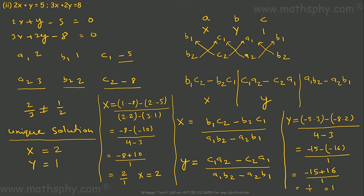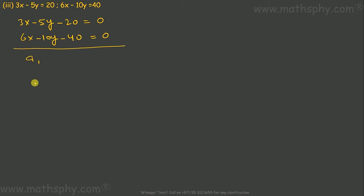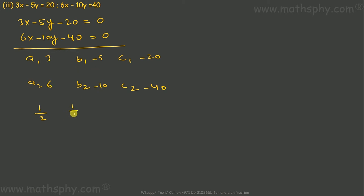For this equation, x = 2 and y = 1, found through the cross multiplication method. Let's look into the next one. This is 3x − 5y − 20 = 0 and 6x − 10y − 40 = 0. A1 is 3, A2 is 6, B1 is negative 5, B2 is negative 10, C1 is negative 20, C2 is negative 40. A1/A2 = 1/2, B1/B2 = 1/2, C1/C2 = 1/2 — all equal. So this gives coincident lines, meaning infinitely many solutions.